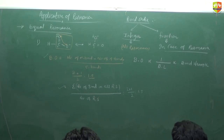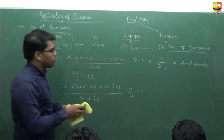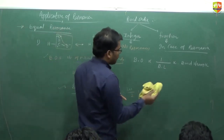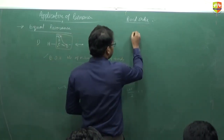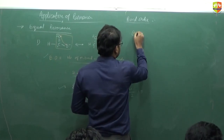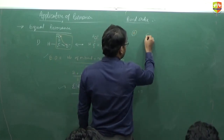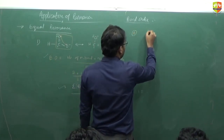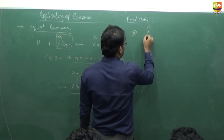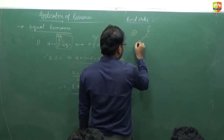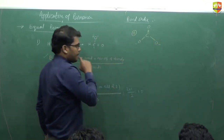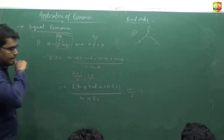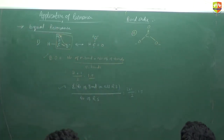Another example: CO₃²⁻. What is the bond order of the carbon-oxygen bond in CO₃²⁻?